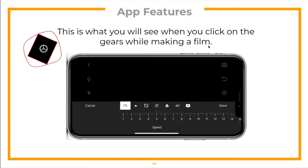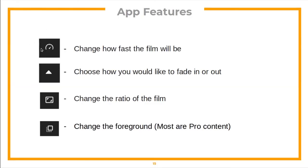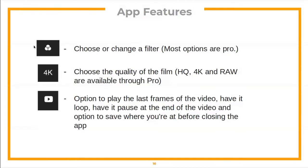When you click on the gears icon while making a film, these settings appear. You can change how fast the film goes — for example, setting it to 2x speed makes it go twice as fast. The triangle controls fade in and fade out. The rectangle with arrows changes the ratio of the film. The square changes the foreground. There are filter options, though most are pro-only. You can also change the quality of the film — high quality, 4K, and RAW are pro-only. The C2 button plays the last section of the video, pauses at the end, and saves your progress.